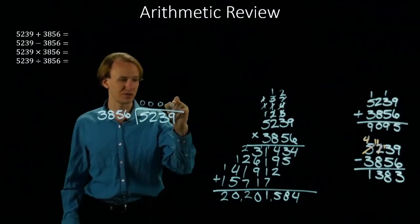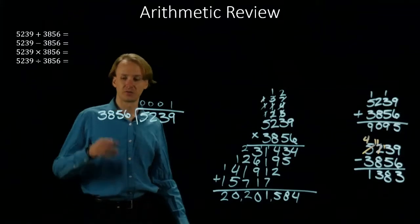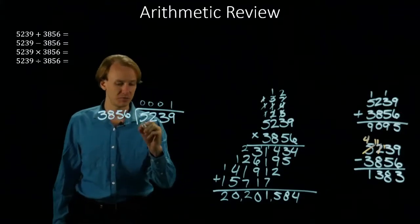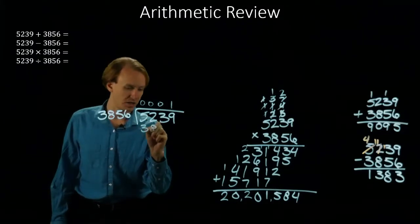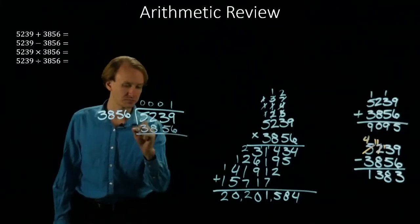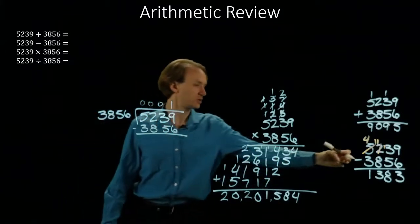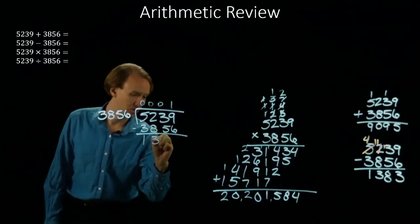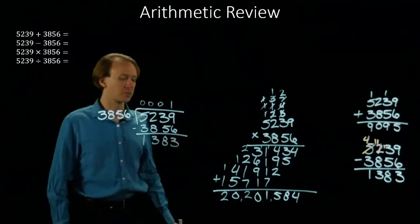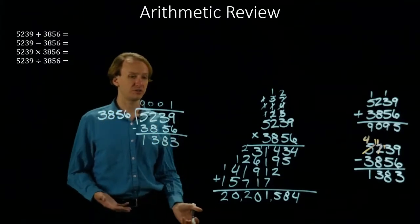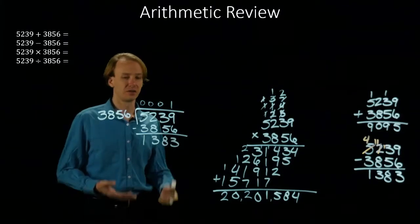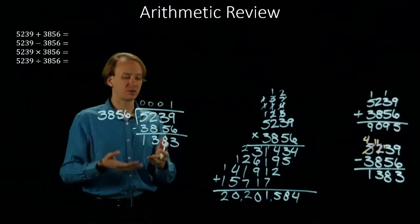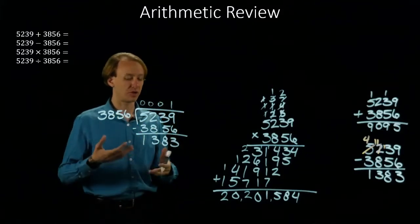So it looks like it will go in about once. Twice would be 7600 something. So we should be able to subtract 3856 from this. And since we actually already did that arithmetic, we know that it's 1383. So if I wanted to do integer division, I would say that 5239 divided by 3856 goes in once with a remainder of 1383.